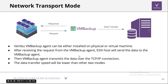In Network transport mode, the VM Backup Agent can be installed on a physical machine or any VM in the environment. When a backup request is raised, the agent makes a request to the ESXi host, reads the data, encrypts it, and sends it to the BDR server — all over a TCP/IP connection. Data transfer speed is comparatively lower in this mode compared to Direct SAN and Hot Add modes.